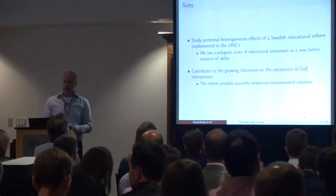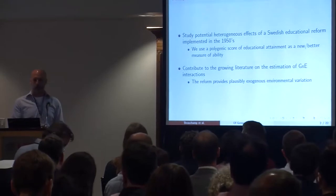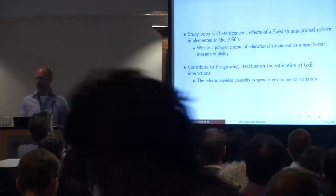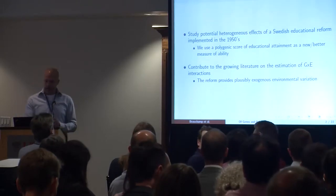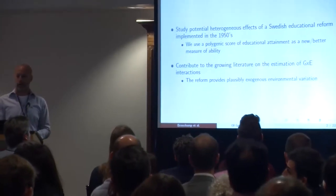We have two main aims for this study. First, on the substantive side, we want to study potential heterogeneous effects of a Swedish educational reform implemented in the 1950s. Our contribution is that we use a polygenic score of educational attainment as a new and hopefully better measure of ability. Second, we hope to contribute to the growing literature on estimation of G-by-E effects, arguing that the reform provides plausibly exogenous variation in educational attainment.